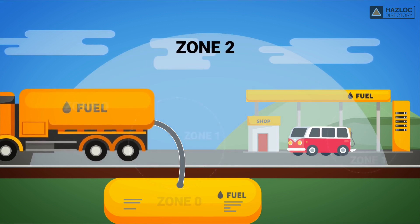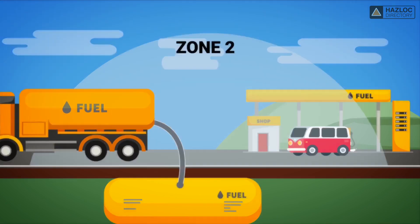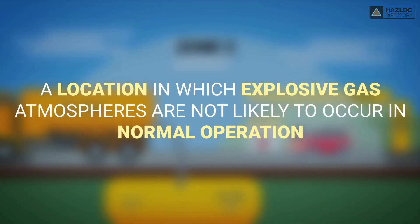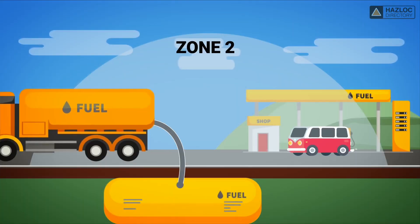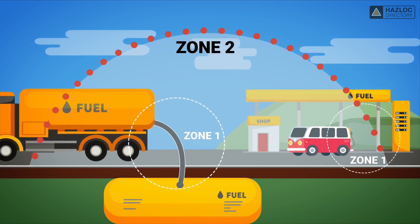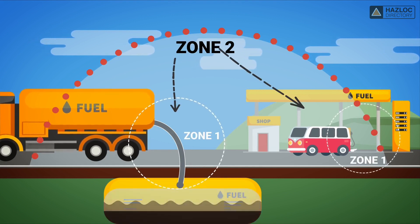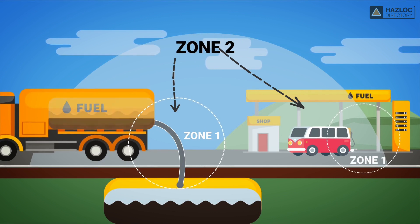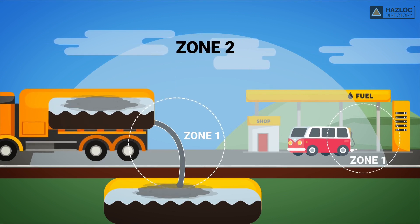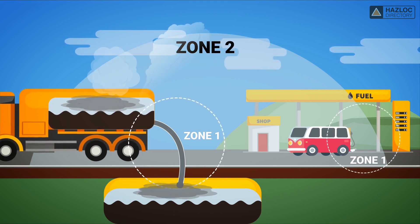In this animation, our focus is on the Zone 2 classified areas. Zone 2 is a location in which explosive gas atmospheres are not likely to occur in normal operation, and if they do occur, they will exist for a short time only. Zone 2 includes the area adjacent to a Zone 1 location from which gas-explosive atmospheres could be communicated. In our example of the tank, the area identified as Zone 2 is outside of and immediately adjacent to the Zone 1 area.